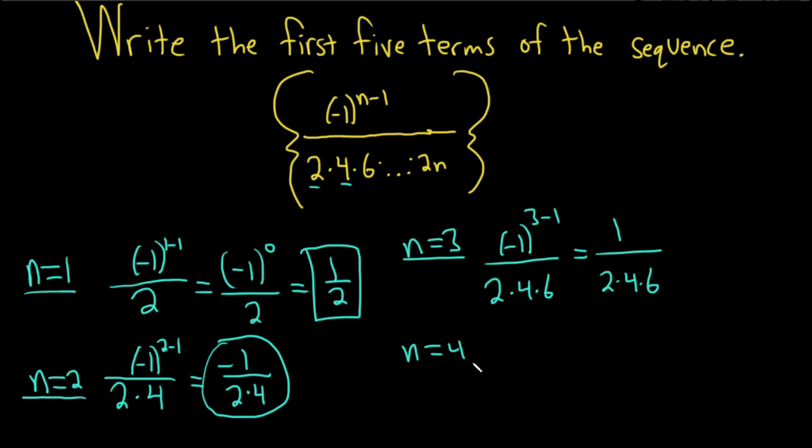For n equals 4, this is negative 1 to the 4 minus 1 over 2, 4, 6, 8. This is negative 1 cubed, which is negative 1, because negative 1 to an odd power is negative. So we have negative 1 over 2, 4, 6, 8.